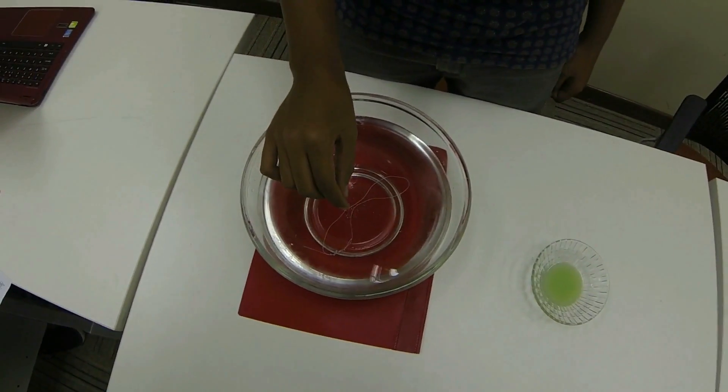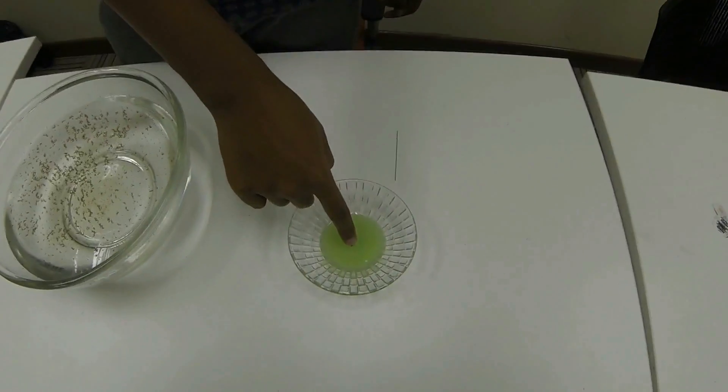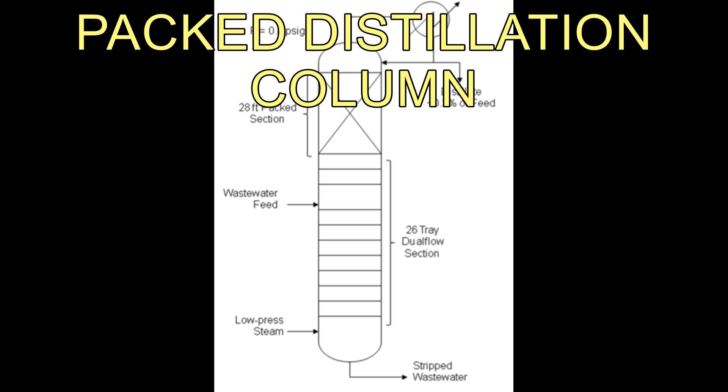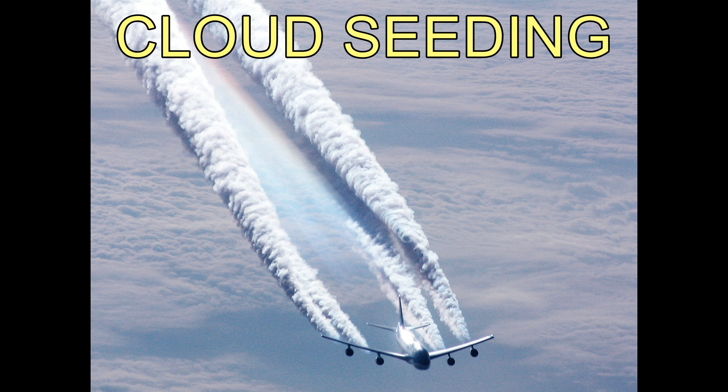Here are some other examples of the Meringoni effect that we can see in our daily lives. Applications in the engineering field include the packed distillation column and falling film absorber. The efficiency of the absorption can be increased by Meringoni convection. The Meringoni effect is also used in cloud seeding technology.